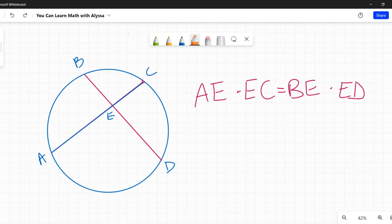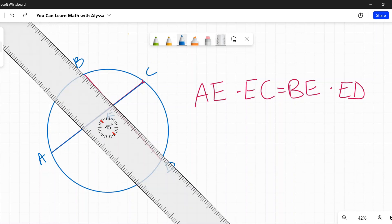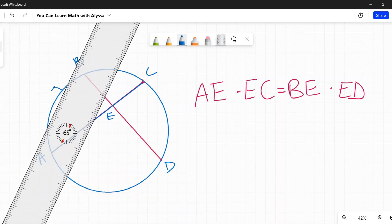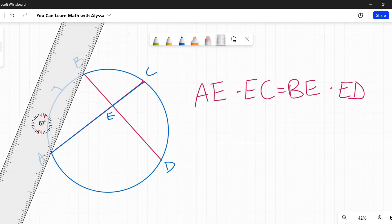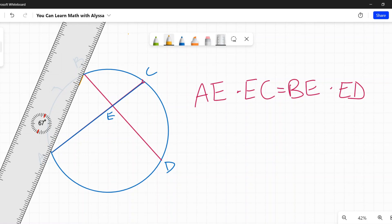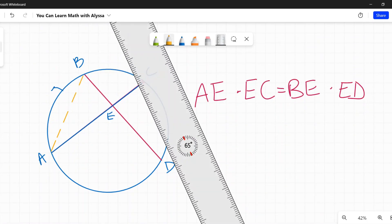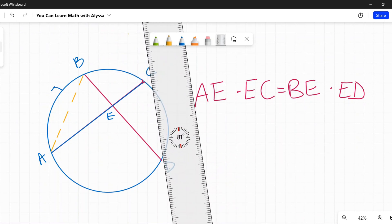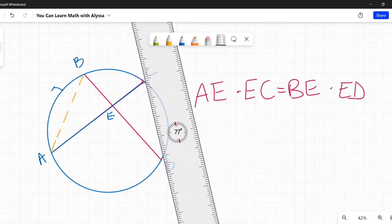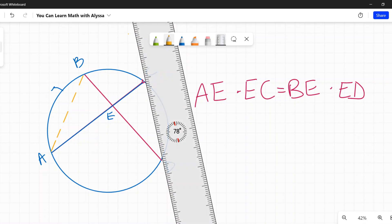So why does this work? This all has to do with similar triangles. So we are going to make some similar triangles. I'm going to draw, and I'm going to use this ruler so we can get a dotted line. It doesn't have to be a solid line, just so I can see these similar triangles we're making. But I don't want us to forget about those original chords.